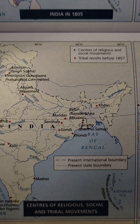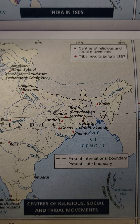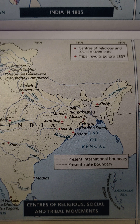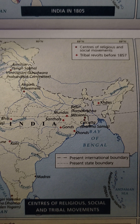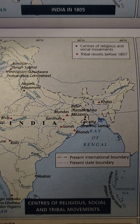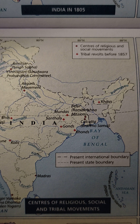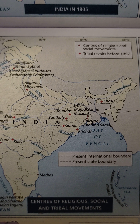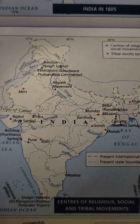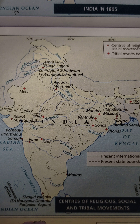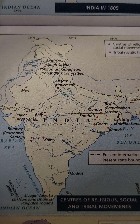The star area represents the tribal revolts before 1857. From the west to east side, these are the tribal revolt areas: the Munds, Santhals, Khonds, and Khasis. In Rajasthan — Mers, Bhils, and Kolis. These are the tribal revolts before 1857.